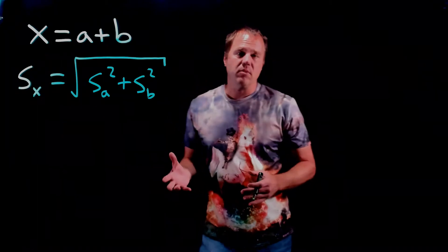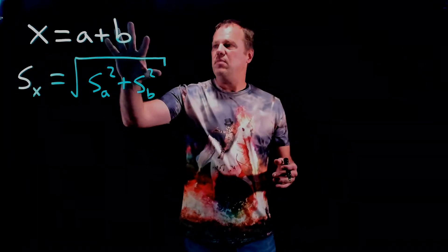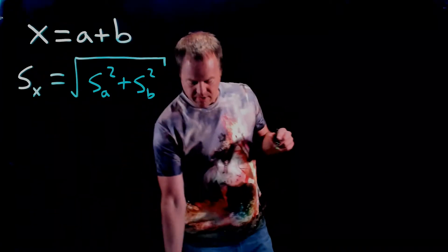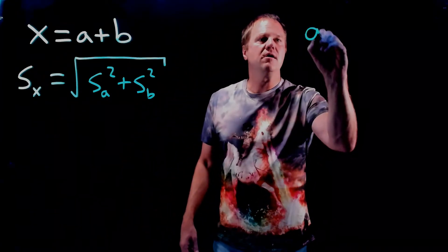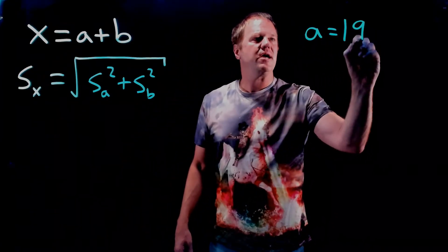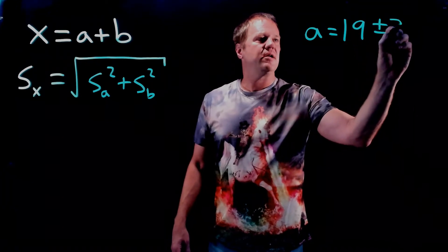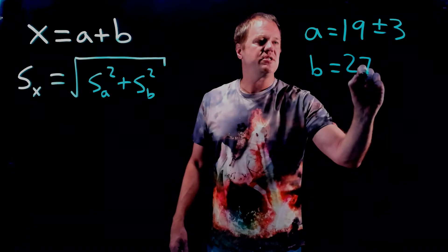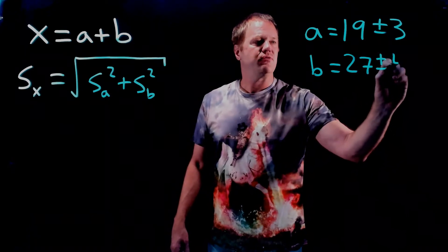I'm going to make up some numbers for a and b and calculate x and the uncertainty in x. Let's say that we have a equal to 19 plus or minus 3, and we have b equal to 27 plus or minus 4.